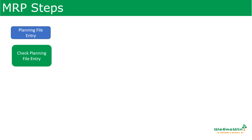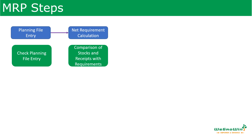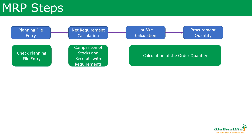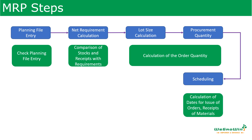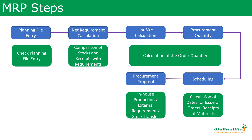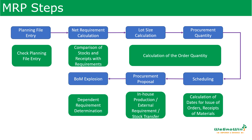We also discussed the various steps involved in MRP. In SAP, first there will be a planning file entry for each material. After that, there will be a net requirement calculation where stock, requirements, and receipts are compared and net requirement is arrived at. Then lot size calculation and procurement quantity are arrived at considering the order quantity — that is the rounding value, lot size, and many other factors. Then scheduling is done: the date on which we need to issue the order and when we should receive the materials. Then procurement source proposal — whether it has to be in-house production, external procurement, or stock transfer. And then BOM explosion goes to the next dependent item, cycling through as needed.